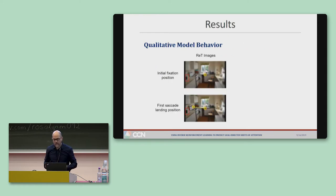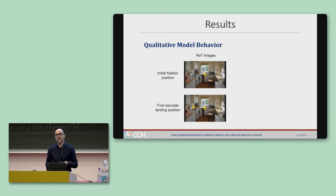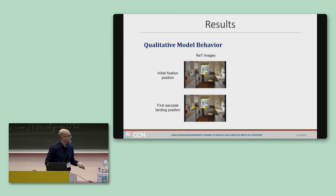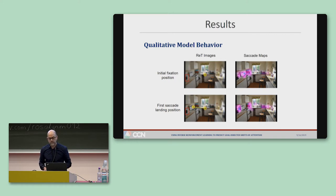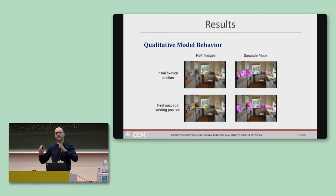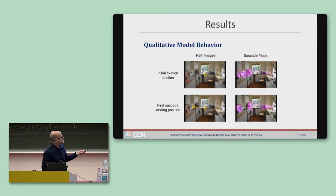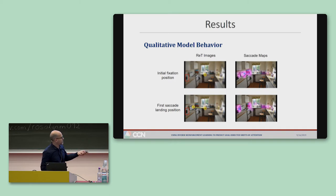Starting with a qualitative analysis: here are two RET images with the microwave target indicated in red. The top image was computed based on the center initial fixation, which is why it's blurry on the sides, and the bottom image was based on the landing position of the first saccade. The corresponding saccade maps show the total reward expected by fixating different locations, with bluer signaling greater reward. The model thought the greatest reward would come from fixating the stove, but after that eye movement and the resulting change in state, it then expected greater reward from the microwave target.